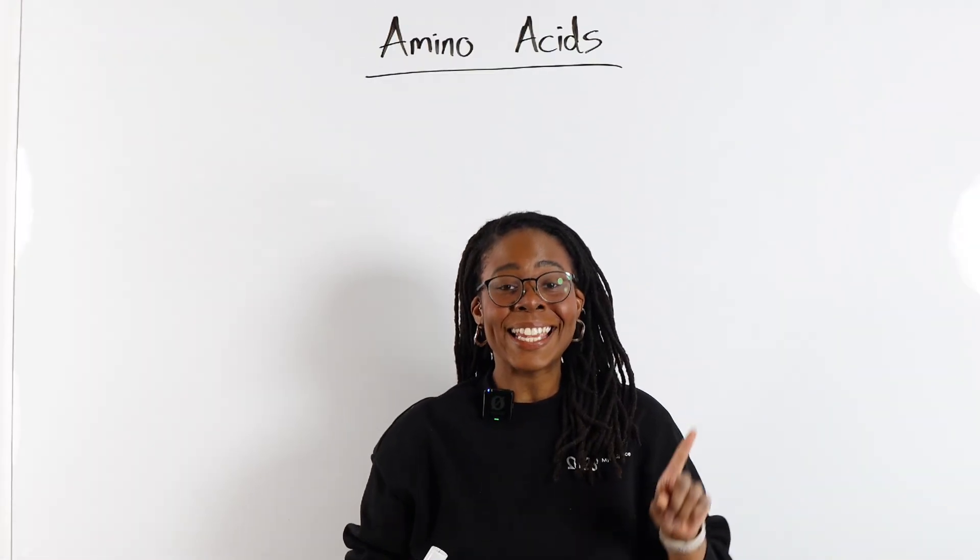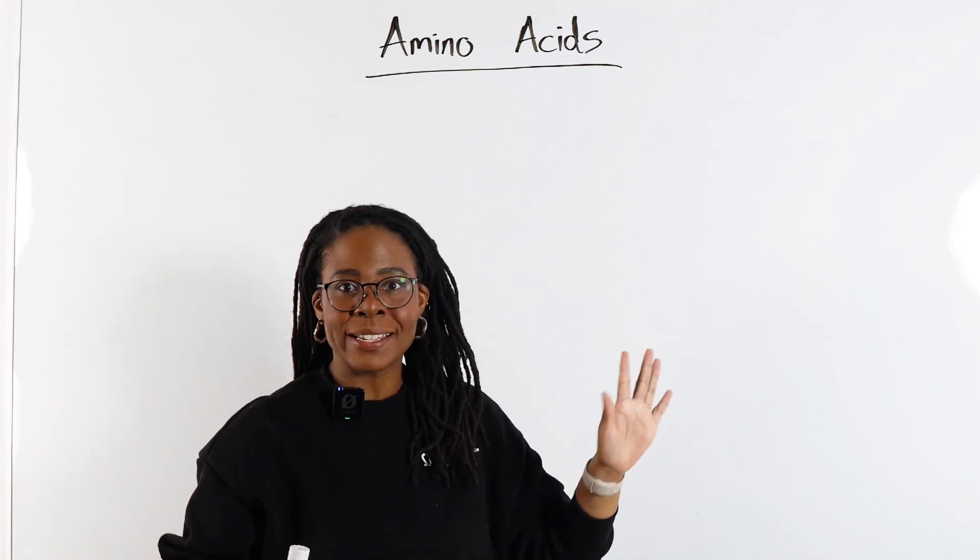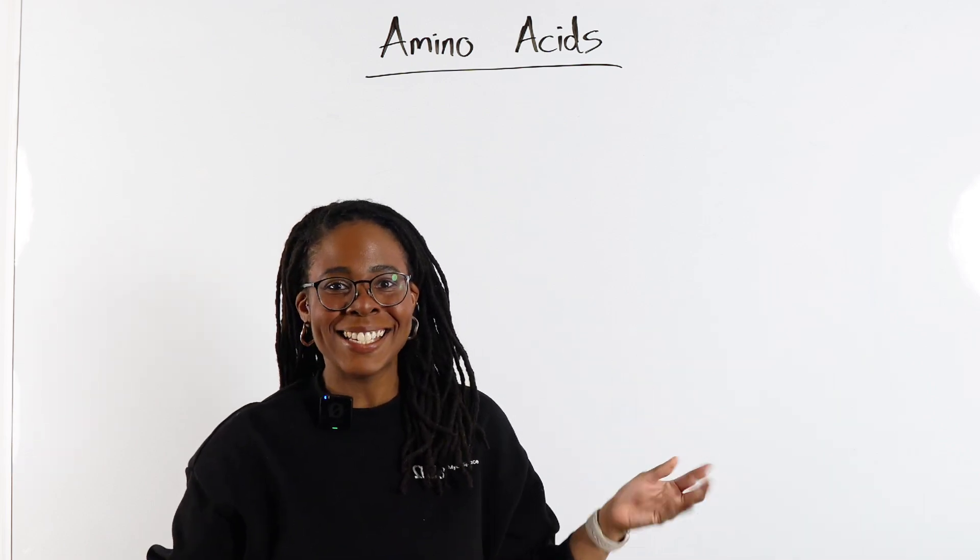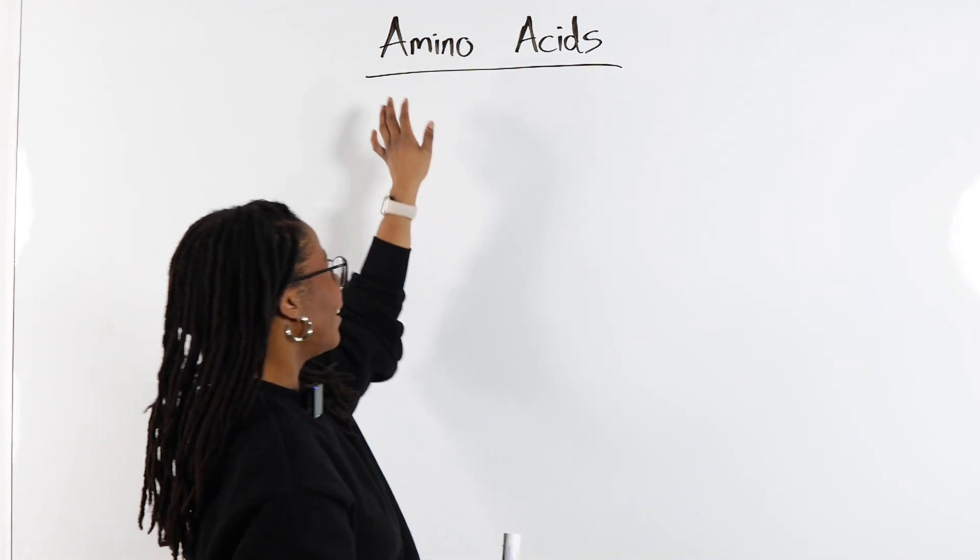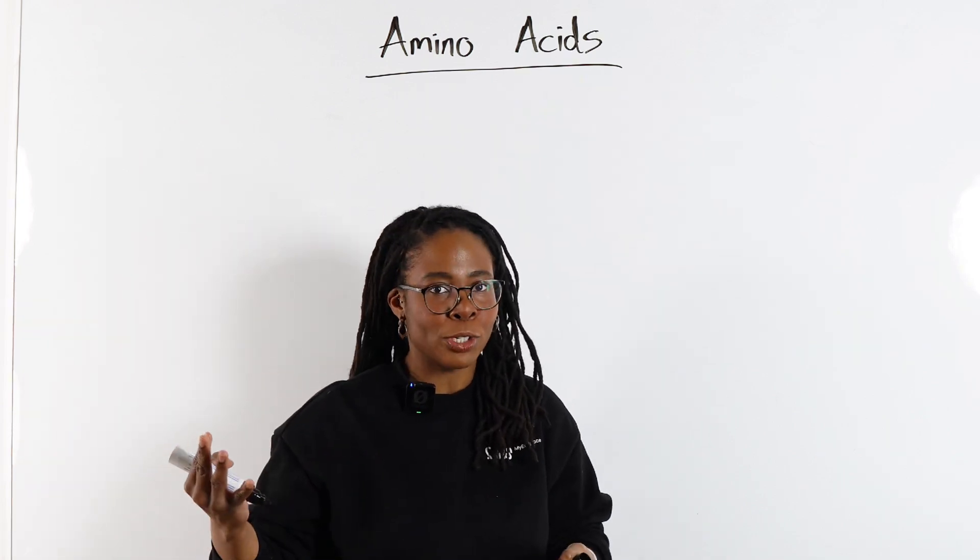Let's talk about amino acids in A-level chemistry. So let's start with the basics. What is an amino acid? An amino acid has got an amine group and a carboxylic acid group and it is of course a biological molecule.